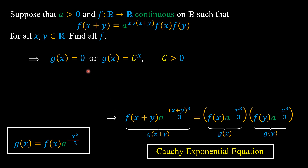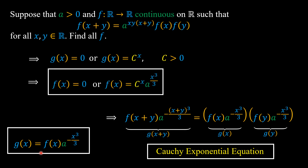By the Cauchy exponential equation theorem, g(x) equals 0 or g(x) equals c to the power of x, with c a positive real number. Substituting back the definition of g, we have f(x) equals 0 or f(x) equals c to the power of x times a to the power of x³ over 3. It is easy to check that f(x) equals 0 is a trivial solution to the functional equation.